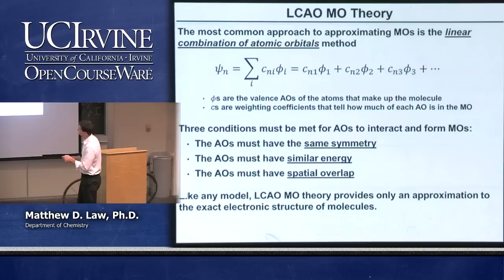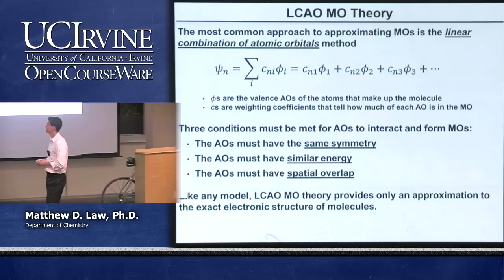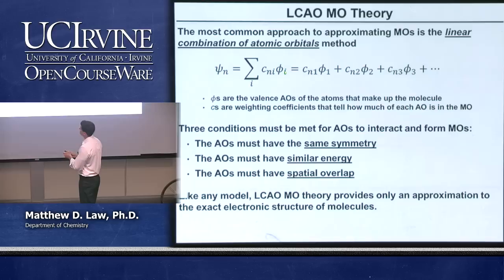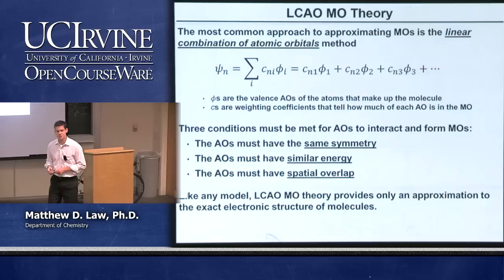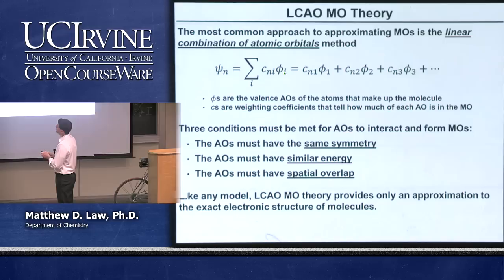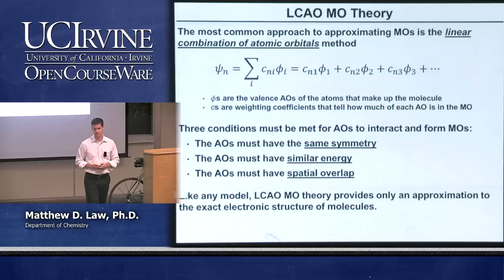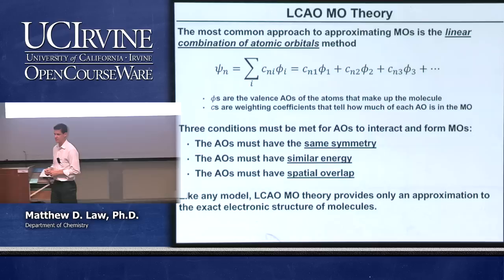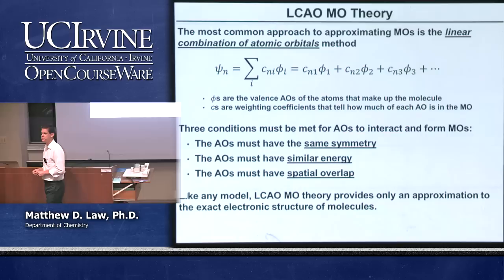A linear combination of atomic orbitals means: psi-n, the wave function of molecular orbital n, equals the sum of atomic orbitals phi, each weighted by a coefficient C-n. The atomic orbitals could be 1s, 2s, 2p, or 3d, depending on the problem. Usually we sum a finite number — we'll start with 2. The weighting coefficient tells us how much of the molecular orbital is built from each individual atomic orbital — basically the amount of mixing of atomic orbitals in the molecular orbital.